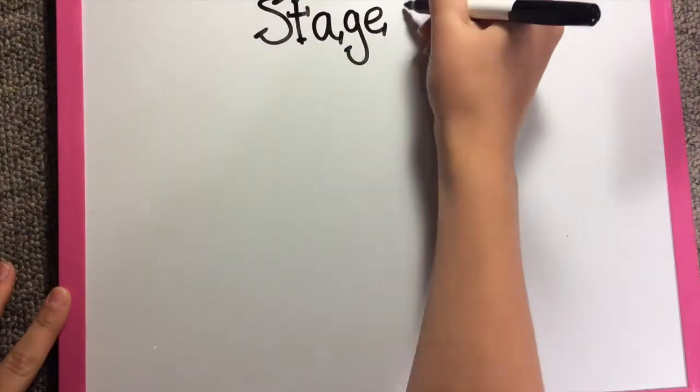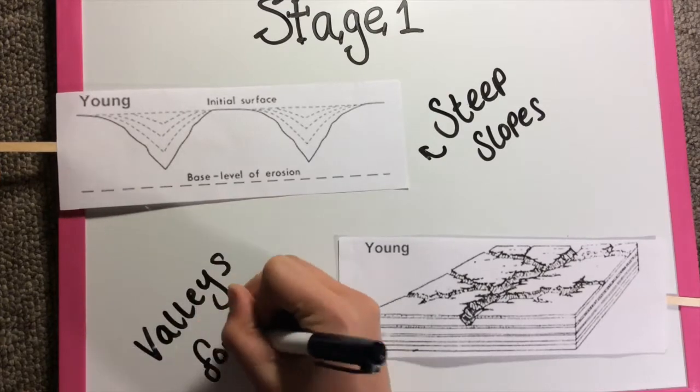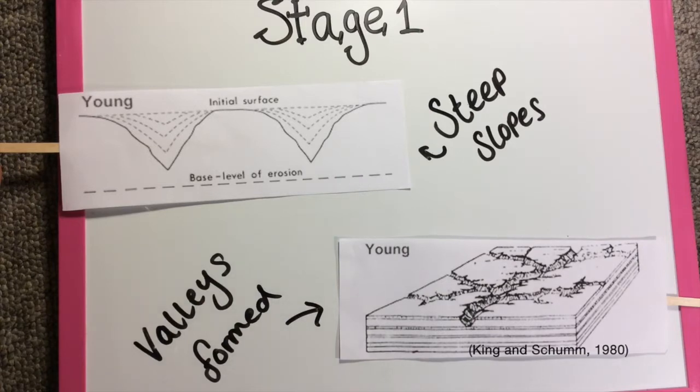The first stage, youth, occurs when rivers cut into the ground, creating narrow V-shaped valleys. As water drains downwards, erosion continues, leaving summits of inner valley surface ineffective. As a result, steep slopes are formed.